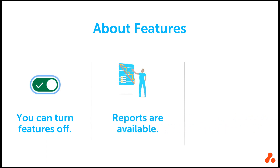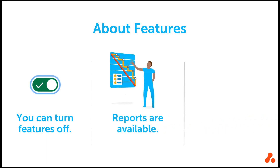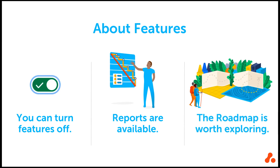Your Scrum project also includes reports. There are two reports available at the time this video was developed. If you are interested in seeing some analytics regarding your team's work, check them out. There is another feature related to Scrum boards that may be worth exploring: the roadmap. The roadmap is a planning tool to help manage your epics. This feature is still in its early stages, so we recommend playing around with it in a test project.